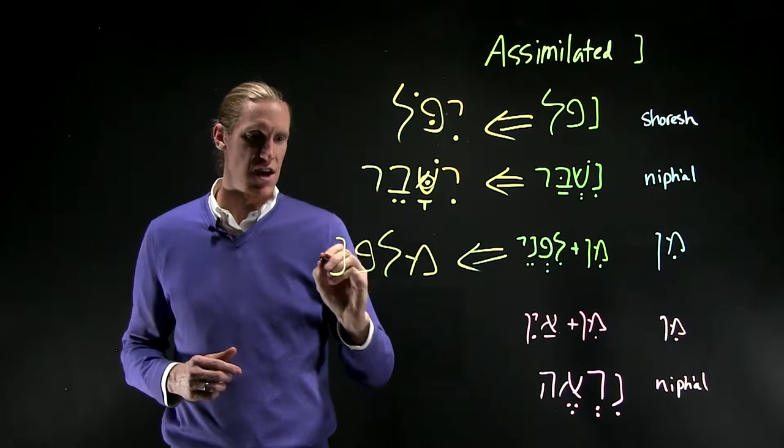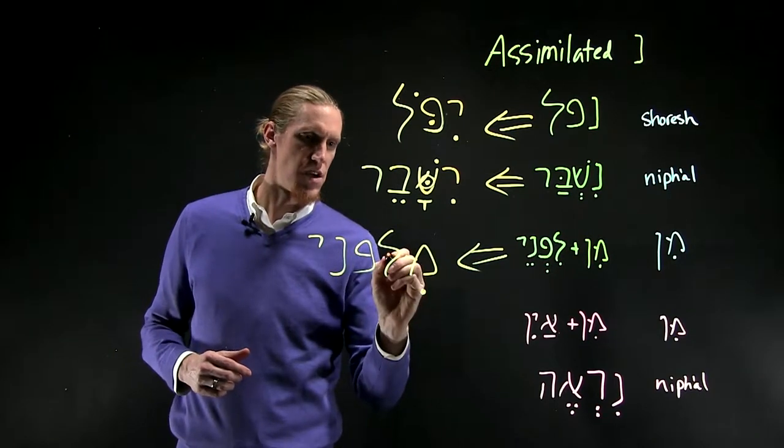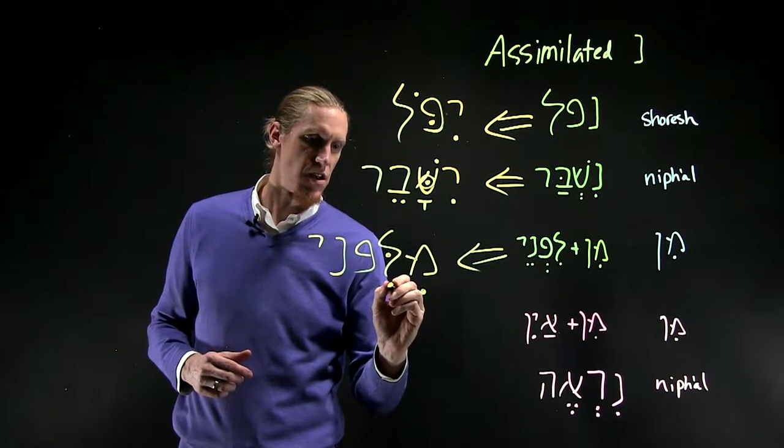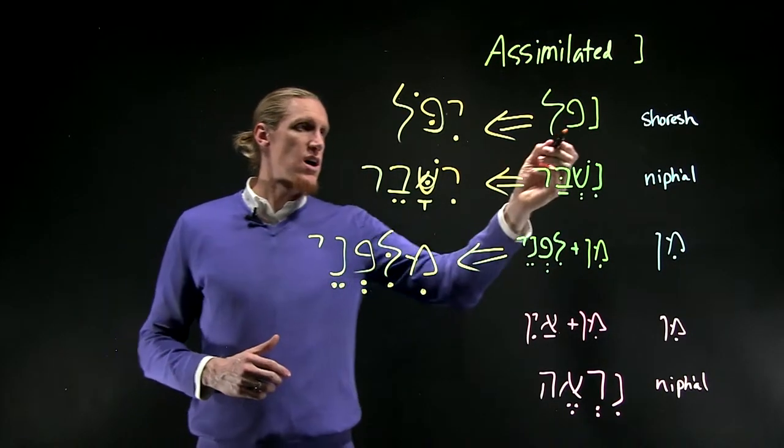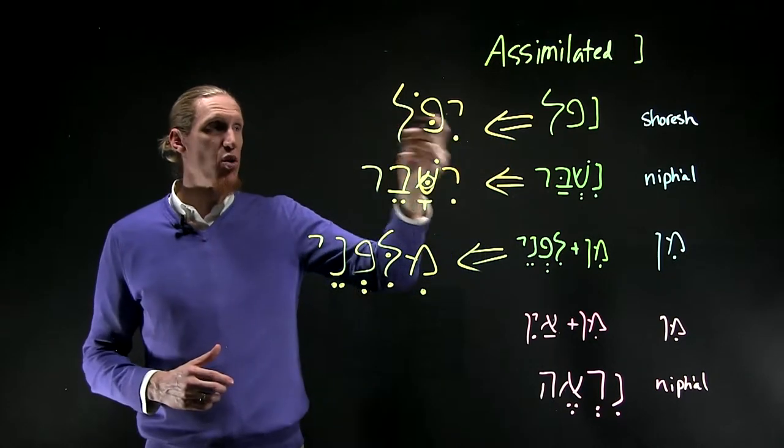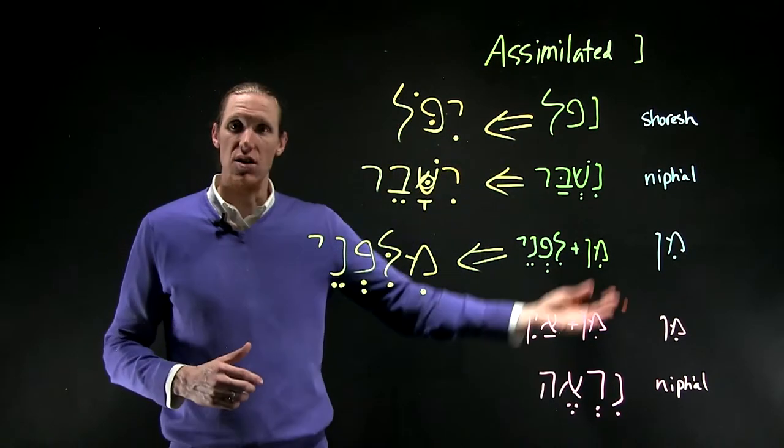me-lifnay. You see the dagesh there, lifnay. So this one here, yipol, is he will fall.